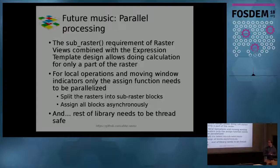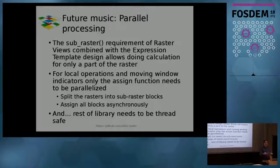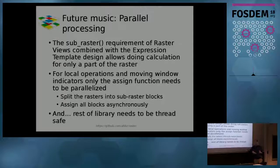Another big advantage that I'm not taking advantage of yet but plan to in the future: the sub-raster idea — that you can set up your expression for the whole raster and then evaluate it only for a part of it — is ideal for parallel processing. I can have my expression for my big raster and say, do this block, then this block, then this block, and so on, all in parallel so that it goes more quickly. The functionality is already there. The only thing that needs to be done is the rest of the library needs to be thread-safe. The part of accessing raster data is at the moment not thread-safe, so it's not parallelized yet, but the architecture is there to actually do it.